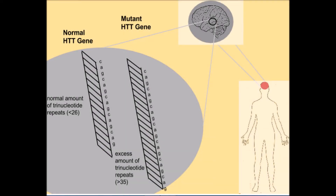Huntington's disease is a neurodegenerative disorder that slowly impairs motor functions in victims, forcing them to live difficult lives. The onset of Huntington's disease symptoms occurs as a direct result of the destruction of neurons in the brain. This occurs due to a mutation of the HTT gene, where the gene has extra trinucleotide CAG repeats,